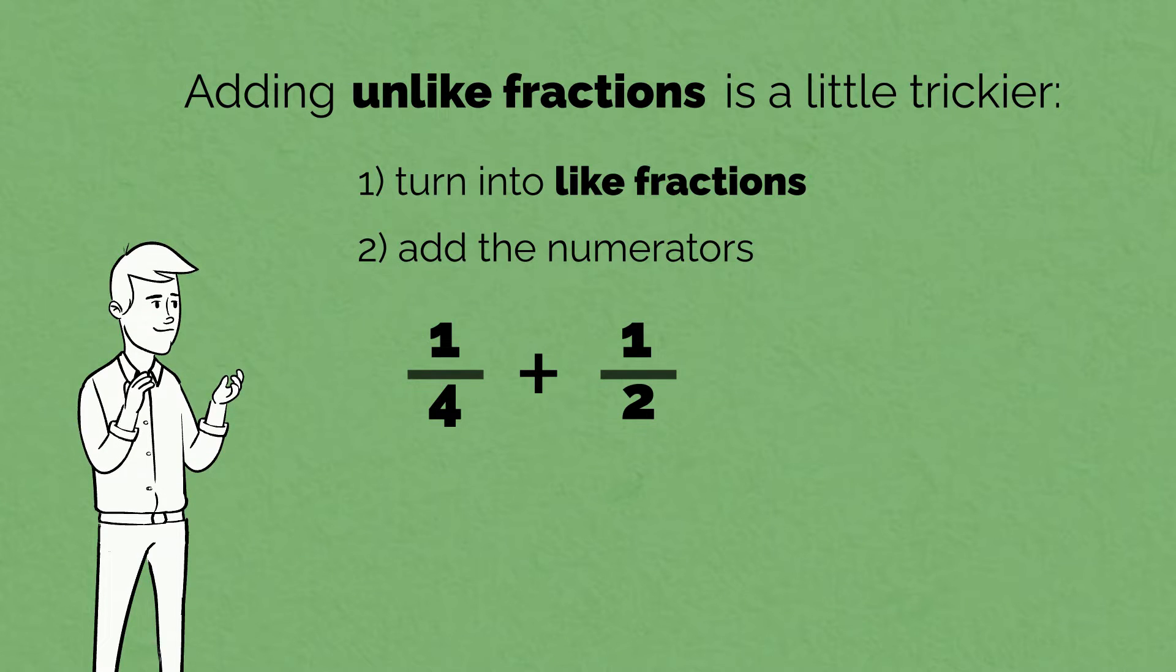Let's make these two fractions like. At the moment, this is in quarters, and this is in halves. If we multiply this denominator by 2, we get 4. Now we have the same denominator as our first fraction.